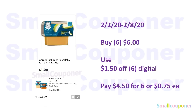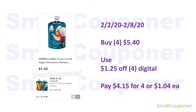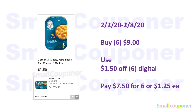The Gerber puree two-pack tubs are $1.00 each — buy six for $6.00, use the $1.50 off digital, and pay $4.50 for six or $0.75 each. The Gerber pouches are $1.35 each — buy four for $5.40, use the $1.25 off 4 digital, and pay $4.15 for four or $1.04 each. The Gerber meals are $1.50 each — buy six for $9.00, use the $1.50 off 6 digital, and pay $7.50 for six or $1.25 each.